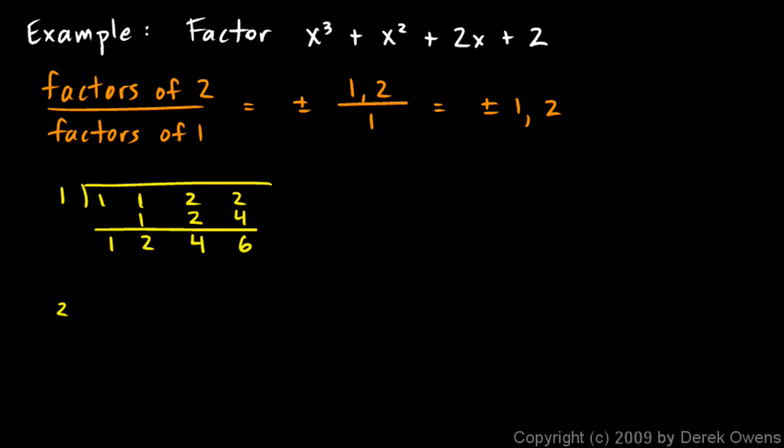So let's try 2 and put our coefficients here: 1, 1, 2, 2. Bring down the 1. 1 times 2 is 2, we add and we get 3. And you can probably see already that this isn't going to work because everything is going to be a positive number. 3 times 2 is 6, we add and we get 8. 8 times 2 is 16, and we get 18. So that didn't work either. So 1 and 2 both failed.